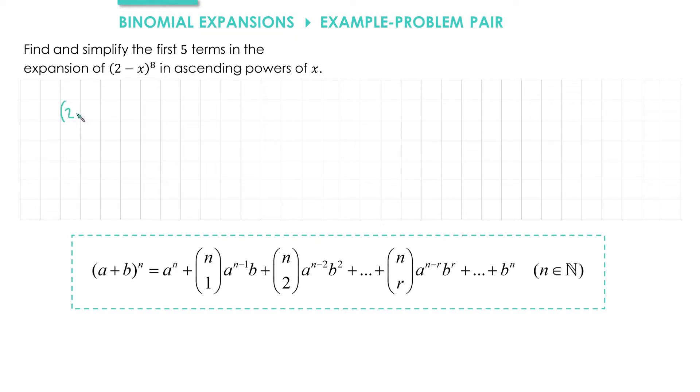So here we have 2 minus x to the power of 8. The first term is the same as always. We're going to do 2 to the power of 8.